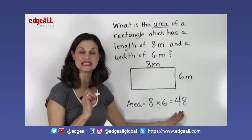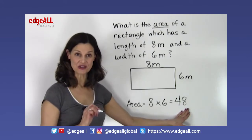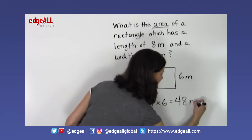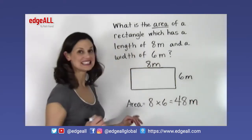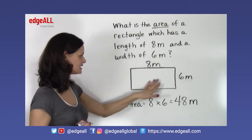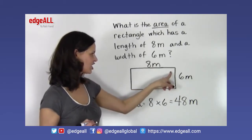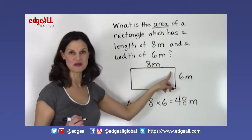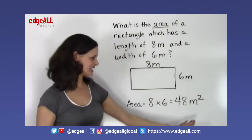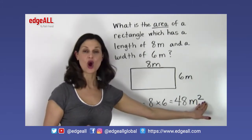When we're working with measurements, we always have to label our answer with the units of measure from our problem. I have meters here, so I need to write meters. Since we're finding the area of the space inside a two-dimensional shape, I have to indicate that it's not just meters — it's meters squared, or square meters.